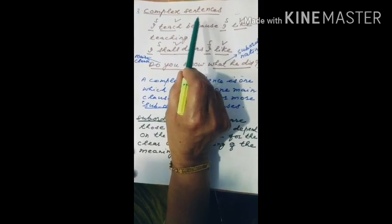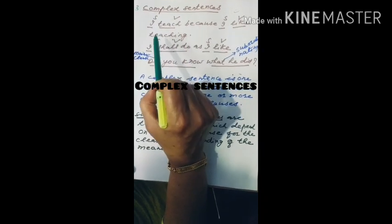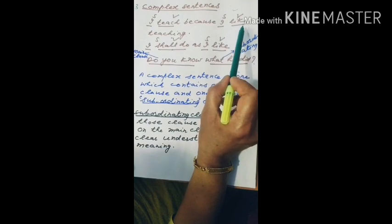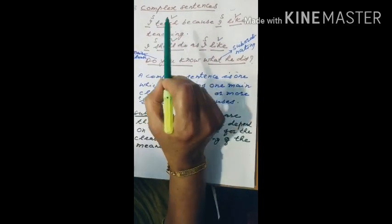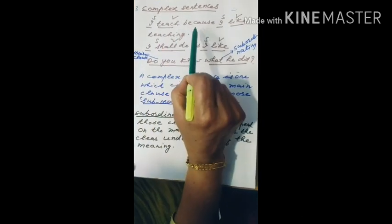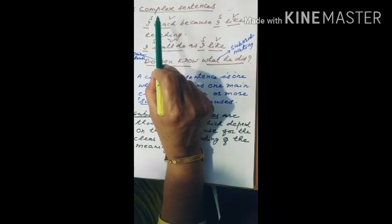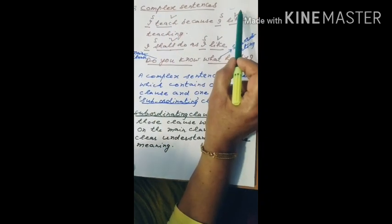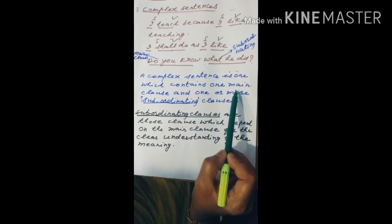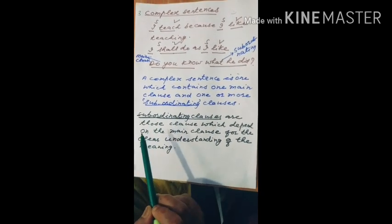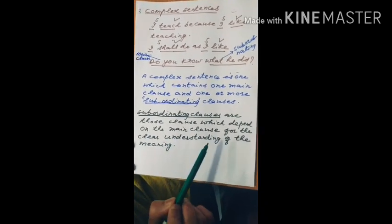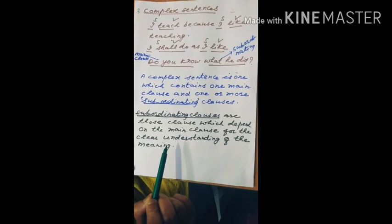Now we move on to the third type: complex sentences. For example: 'I teach because I like teaching.' Here, 'I' is subject, 'teach' is verb, 'because' is conjunction, and again 'I' is subject, 'like' is verb — two subjects and two verbs. 'I teach' can stand alone, but 'because I like teaching' needs the support of the first part. So 'I teach' is the main clause and 'because I like teaching' is the subordinating clause. A complex sentence is one which contains only one main clause and one or more subordinating clauses. Subordinating clauses are those which depend on the main clause for the clear understanding of the meaning.